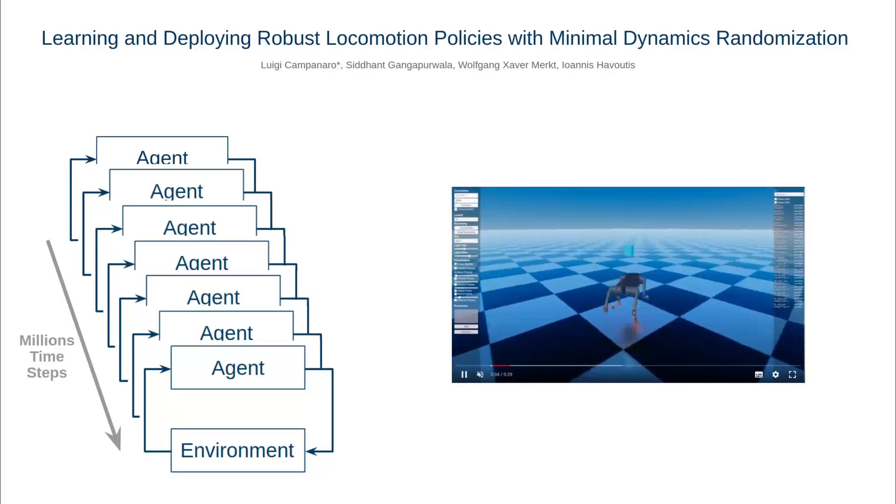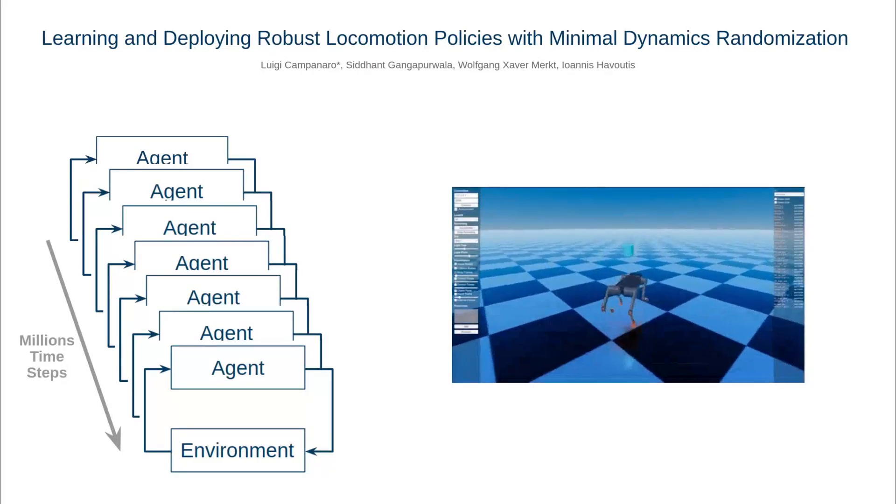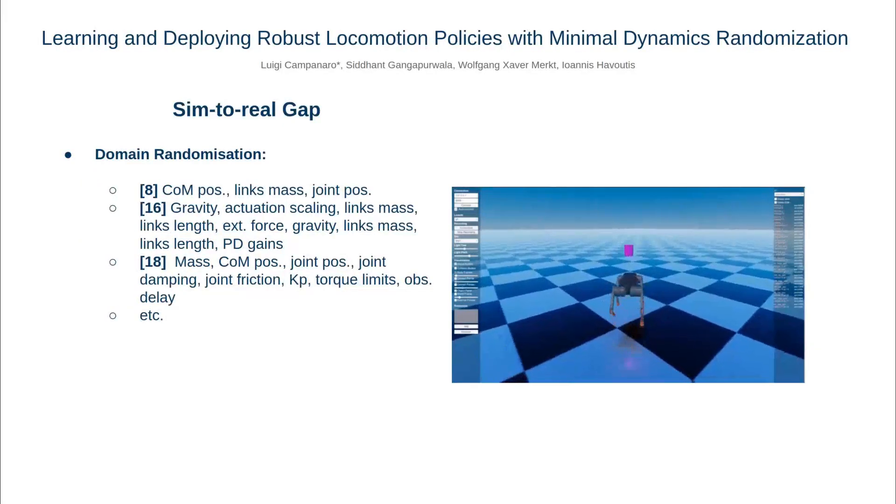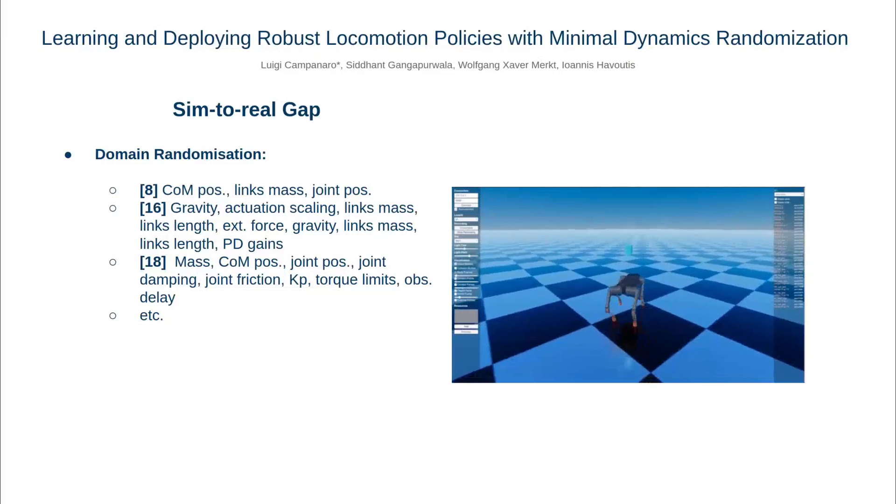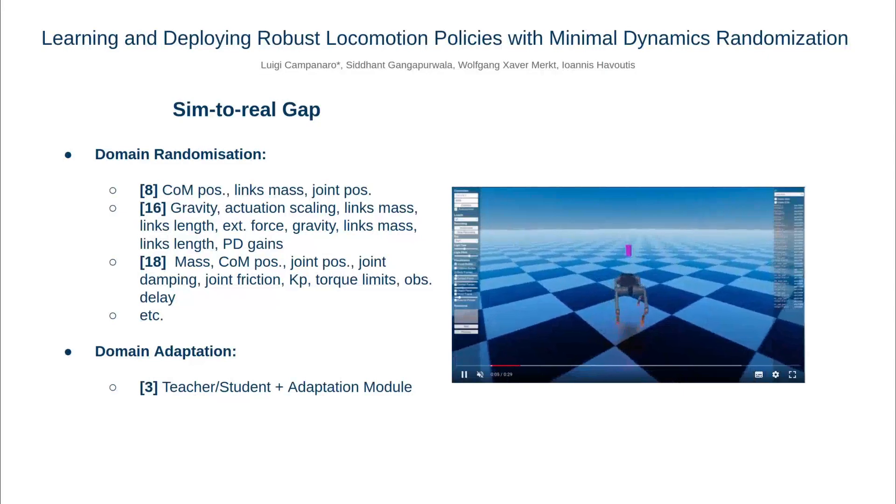In this regard, simulators provide a cheap and abundant source of data. For successful sim-to-real transfer, exhaustively engineered approaches such as domain randomization, system identification, and domain adaptation are generally employed.